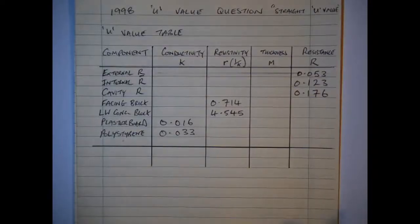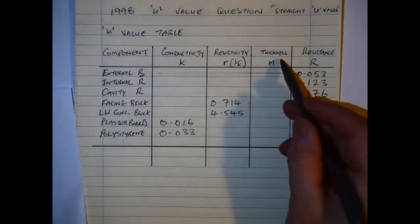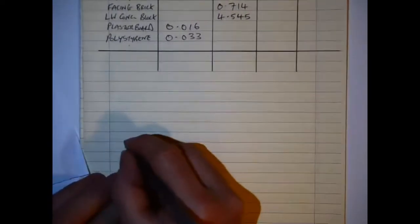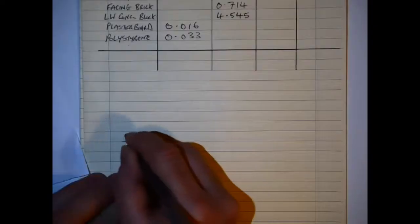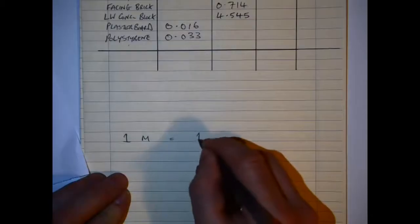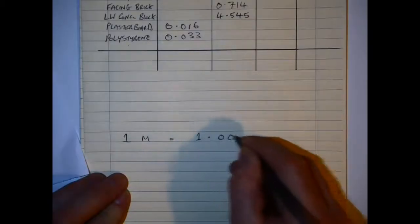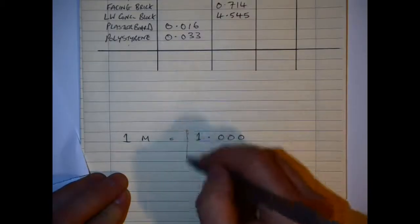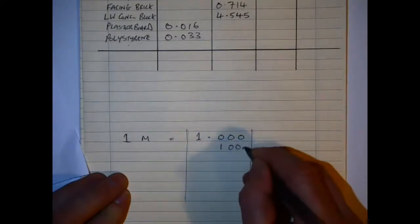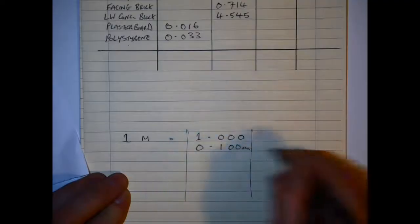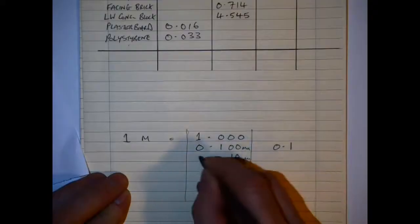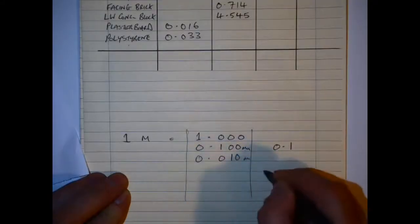So some people might find it useful just to move the decimal place and by three steps. And some people like to do this here - what I'm going to show here is 1.000 is one meter. If I have 100 millimeters, if I have 10 millimeters it's 0.01.